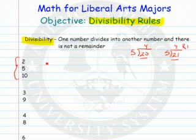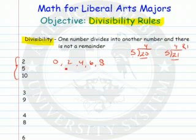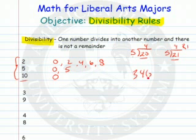A number is divisible by 2 if the ones digit is 0, 2, 4, 6, or 8 — you might say if it's an even number. The rule for 5 is very similar: if the ones place value is a 0 or 5. And the rule for 10 is if the ones place value is 0. So if I look at a number like 346, I can say it's divisible by 2 because it ends in a 6.